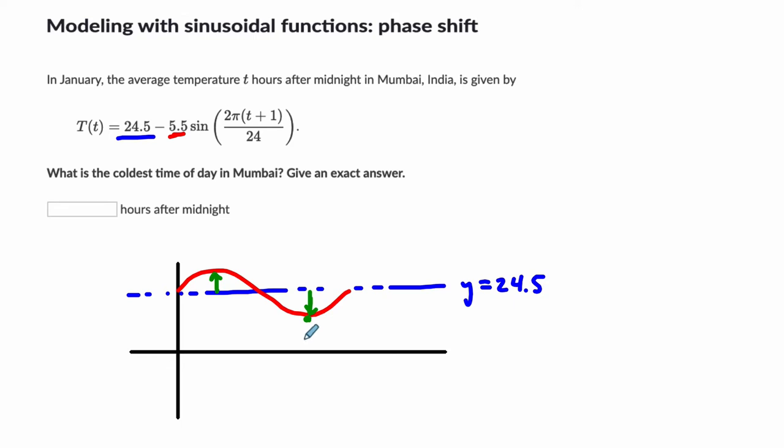So the lowest temperature would be 19, because you have 24.5, the midline, minus the amplitude. It would get as cold as 19 degrees, and then as hot as 24.5, I'm assuming Celsius, plus 5.5, or 30 degrees. So you can use the midline and the amplitude to find the highest and low points, and you get to ignore all these things in here.